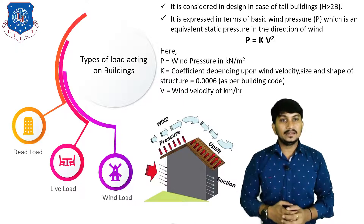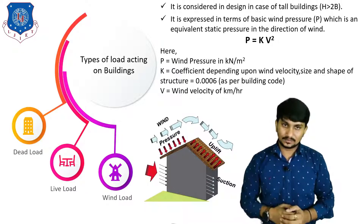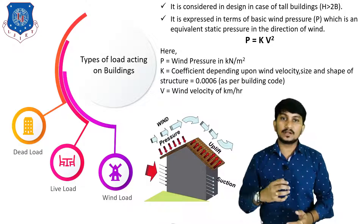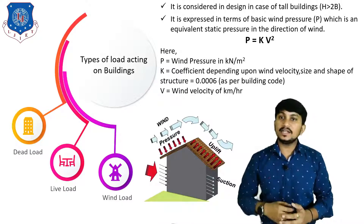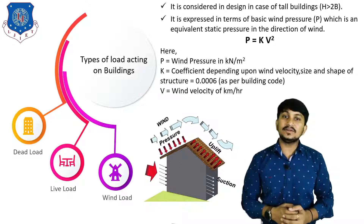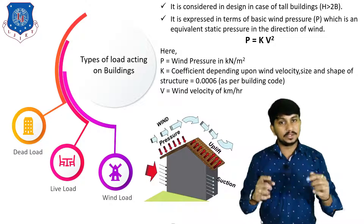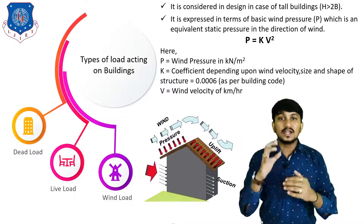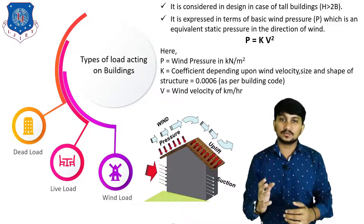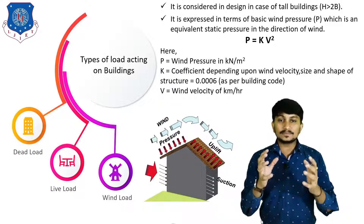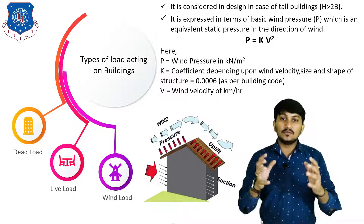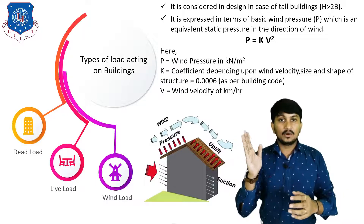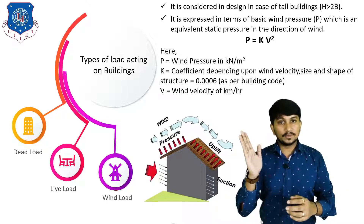K varies from place to place based on topography. V is the wind velocity in km/h, which is also given in IS 875 Part 3 in a table. By this equation, we can find out the wind pressure at each floor and, by applying this pressure on the model, we can find out the overall sway or drift of the building.